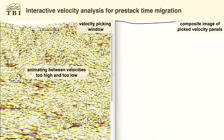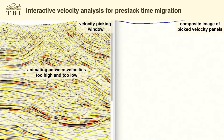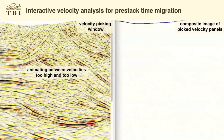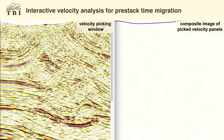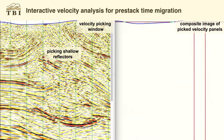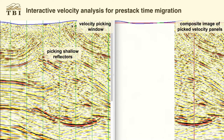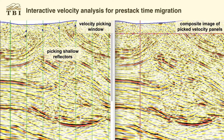How do we get those velocities? This is a tool called VEL-ANAL for velocity analysis. We've got a velocity picking window on the left, and we animate between velocities that are too high and too low. Going back and forth, we can find where we've optimized the imaging, and then make picks in the shallow section where imaging is optimized. The right half of the screen shows a composite image of those picked velocity panels, updated in real time with each pick.